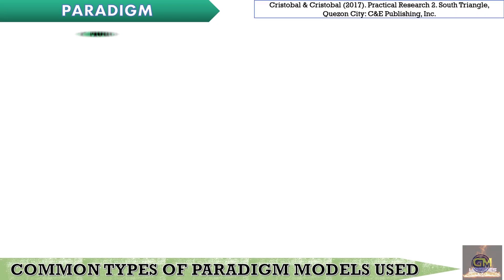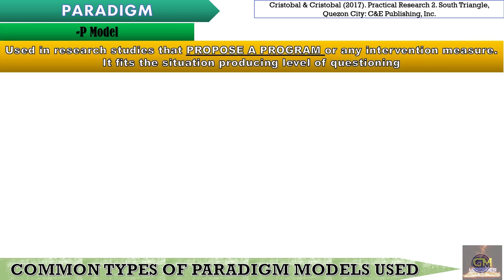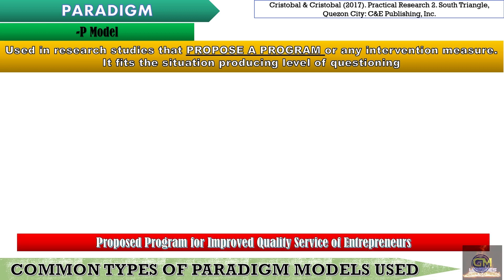The next model is the P model, which is used in research studies that propose a program or any intervention measure. It fits the situation-producing level of questioning. It is worth noting that the P model could simply be an expanded version of the existing models presented earlier. For this example, we have the proposed program for improved quality service of entrepreneurs, which is the expanded version of the IPO model presented earlier.